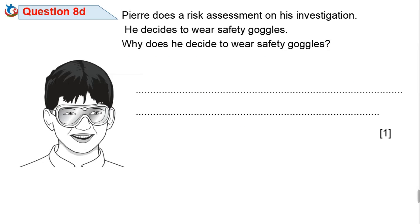Pierre does a risk assessment on his investigation. He decides to wear safety goggles. Why does he decide to wear safety goggles? Safety is essential when carrying out an experiment. Pierre has to wear safety goggles to stop or prevent hydrochloric acid from entering his eyes. This is a very good safety measure.